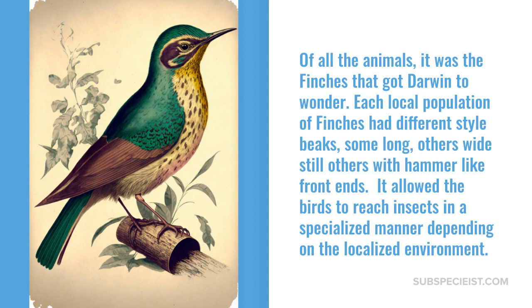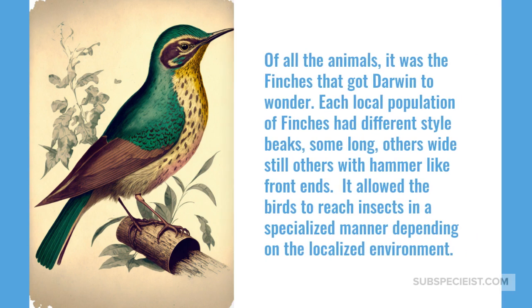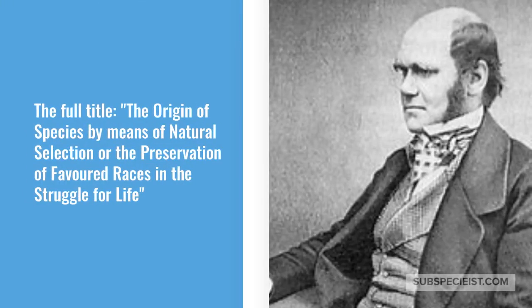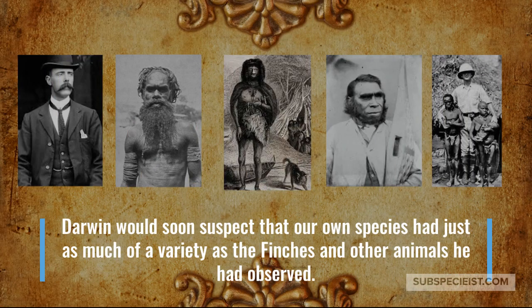Each local population of finches had different style beaks — some long, others wide, still others with hammer-like front ends. It allowed the birds to reach insects in a specialized manner, depending on the localized environment. On the Origin of Species — the full title, The Origin of Species by Means of Natural Selection. Darwin would soon suspect that our own species had just as much variety as the finches and other animals he had observed.